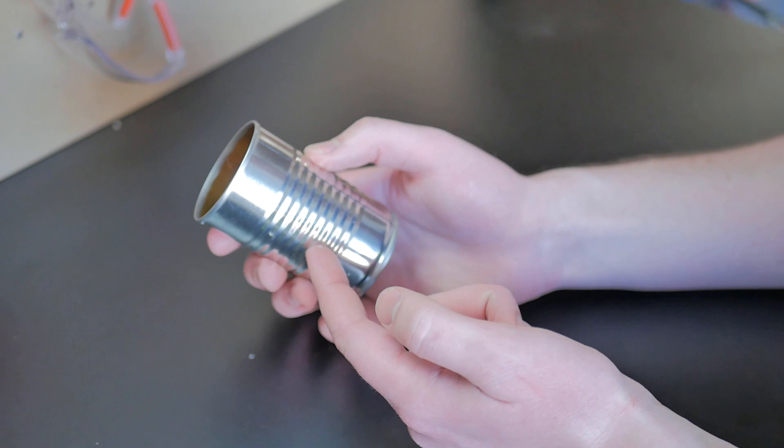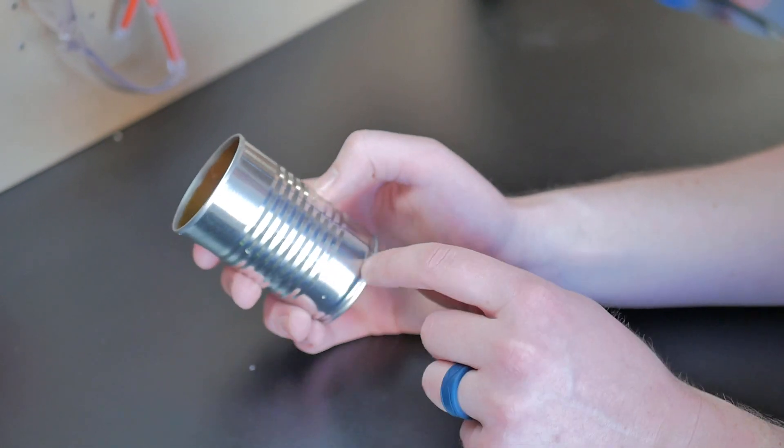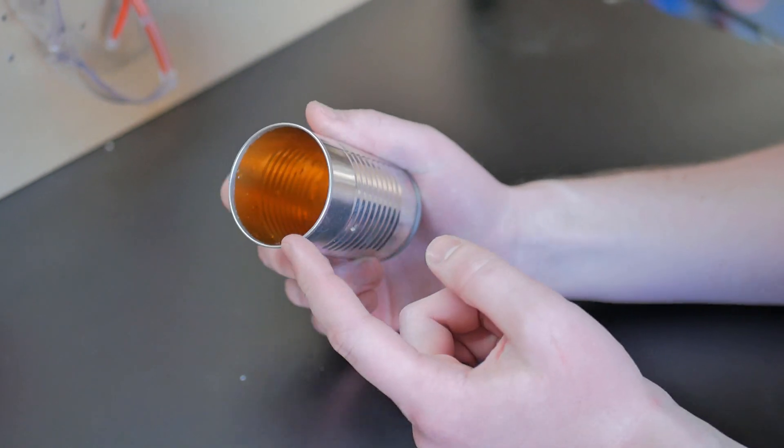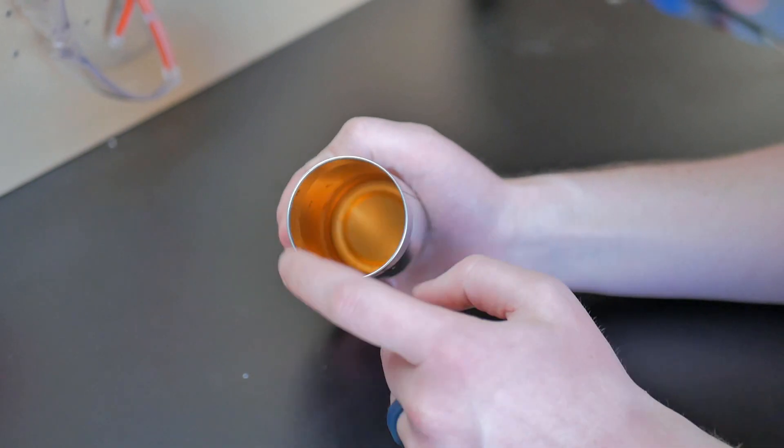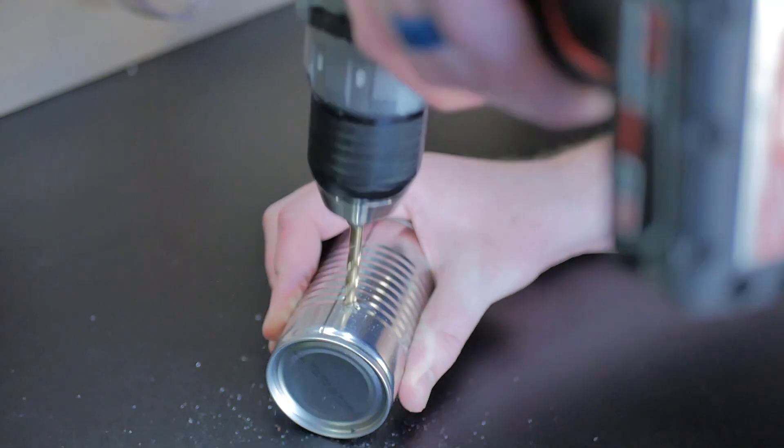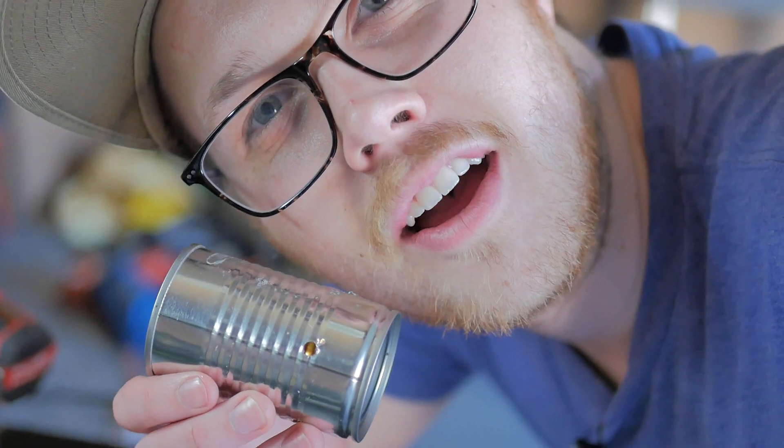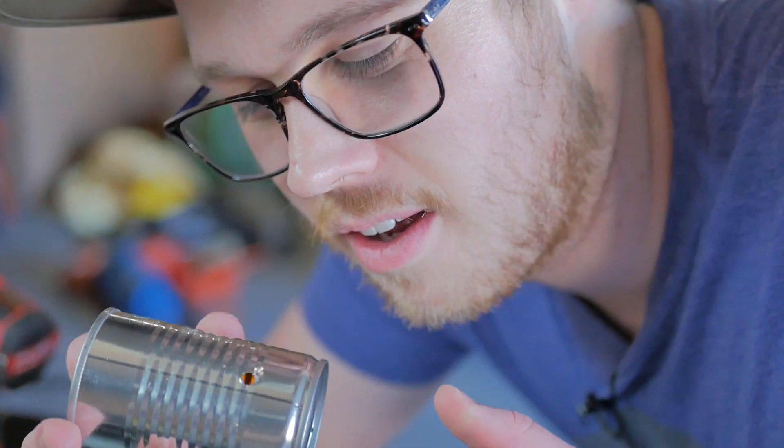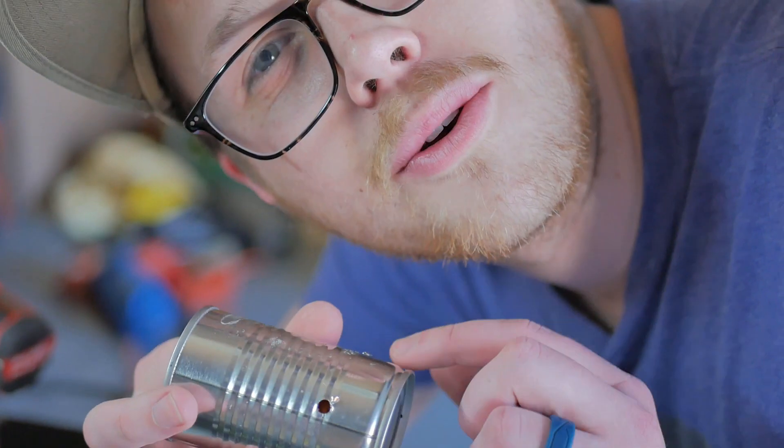Next thing up is taking your tomato paste can and if it has ribs, you're gonna drill five holes on the bottom rib. If not, you measure two and a half inches from the open side down. So I goofed and I drilled four holes equally spaced, not five, but it doesn't really matter. You just need those holes in there.